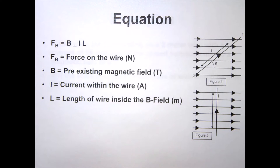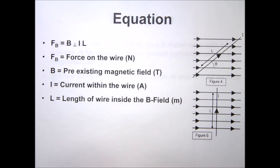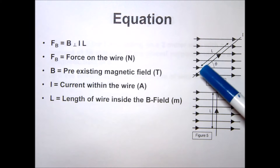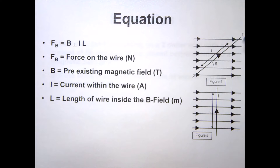The equation is going to be F = BIL, where B is the magnetic field, I is the current, and L is the length of wire inside the field. Notice that it is perpendicular, just like before — so if we have our field and our charge moving at an angle, we want to find the component that's actually perpendicular to that field.